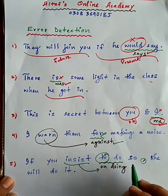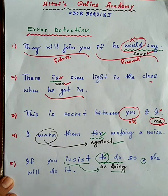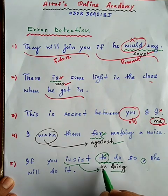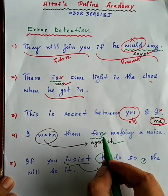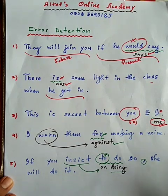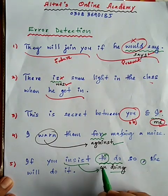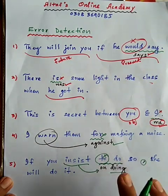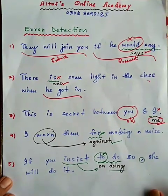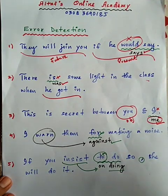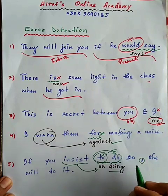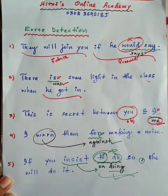جب on ہوگا تو on کے بعد action verb کی ing form استعمال ہوتی ہے، first form نہیں۔ مثلاً اگر لکھا ہو 'if you insist on do so' تو do غلط ہے۔ On کے بعد doing ہوگا، just جیسے far کے بعد making ہے۔ تو صحیح ہوگا: 'if you insist on doing so, she will do it۔' To do غلط استعمال کیا گیا، on doing صحیح ہے۔